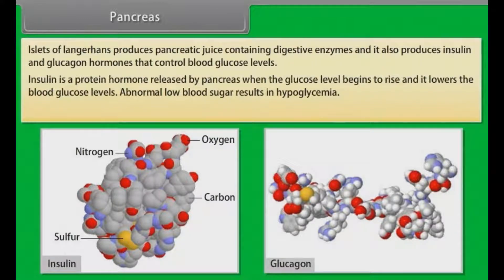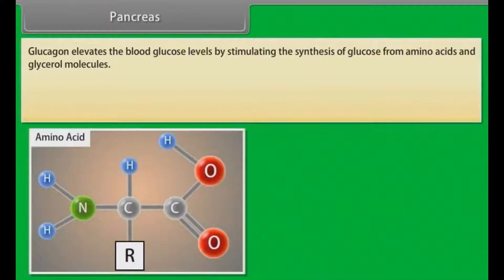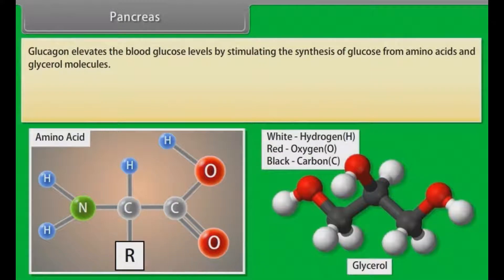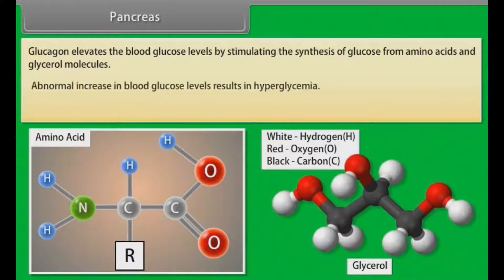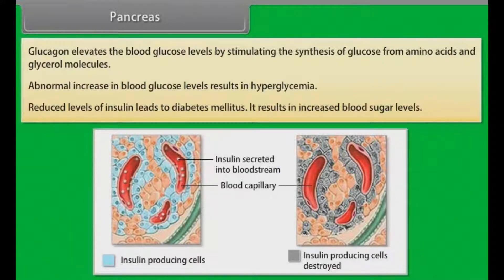Insulin is a protein hormone released by the pancreas when glucose levels begin to rise, and it lowers blood glucose levels. Abnormally low blood sugar results in hypoglycemia. The most important function of insulin is to stimulate the uptake of glucose in liver and muscle cells. Glucagon elevates blood glucose levels by stimulating the synthesis of glucose from amino acids and glycerol molecules. Abnormal increase in blood glucose levels results in hyperglycemia. Reduced levels of insulin lead to diabetes mellitus, resulting in increased blood sugar levels.